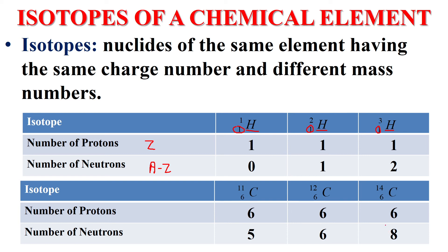For the isotopes of chemical elements, there is one of the isotopes that is stable. Carbon-6-12 is stable.